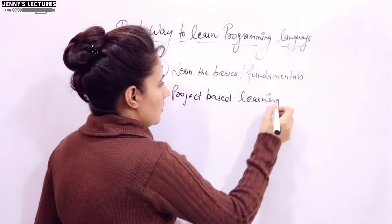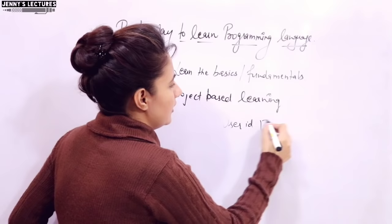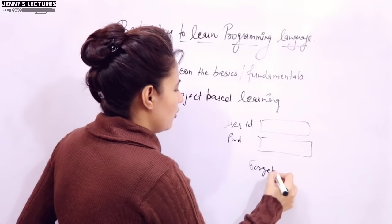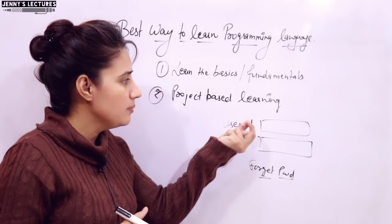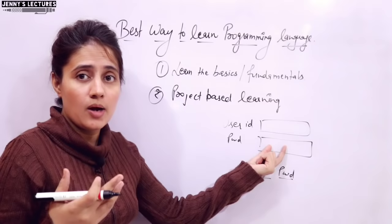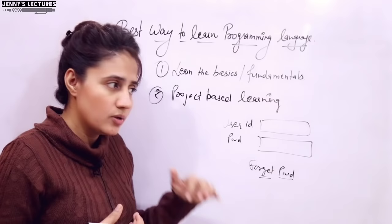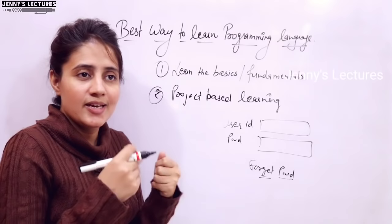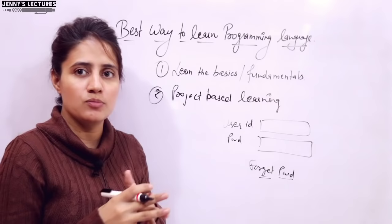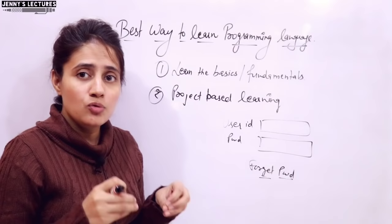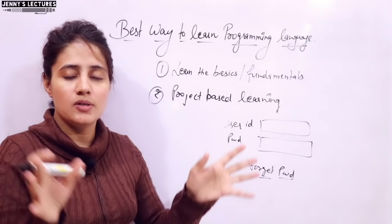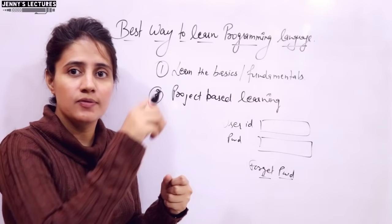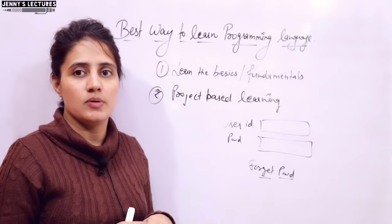So start working on a project after clearing your fundamentals. For example, suppose you are working on a project and you want to implement a user ID and password with a forgot password feature on some kind of website. Now you will search how to make a text box and how to apply validation in password - like if someone enters the wrong user ID or wrong password, it should show 'incorrect user ID or incorrect password.' How to implement this logic - you will search, you can ask on platforms like Stack Overflow and get good answers. Then you will come to know the true meaning of why you are learning for loops and everything in programming language. It's active learning rather than passive learning.